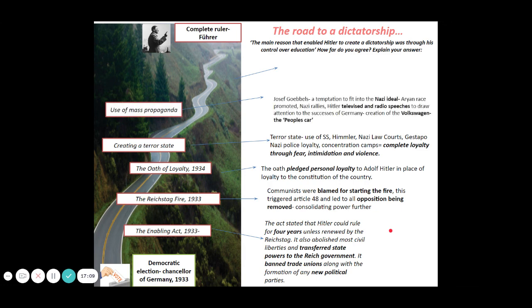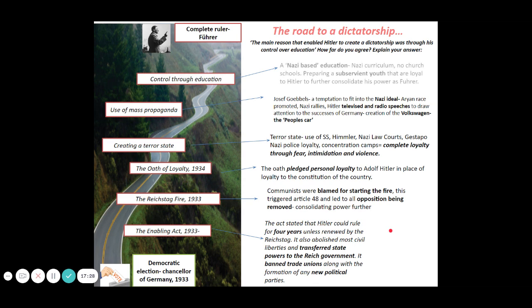There was also the use of propaganda — with Joseph Goebbels in charge — creating a Nazi ideal and promoting it to people through television and radio speeches, and promises like the people's car, the Volkswagen, to bring on board the more moderate middle classes. And then through education, the Nazis took control of the German curriculum quite quickly to try and create a subservient youth totally loyal to the Führer. These things all led to Hitler's rise to power. So this is where we're going to pause today — we'll look at life in Nazi Germany in a separate video. Hopefully this has been useful; if you've got any questions, let me know.